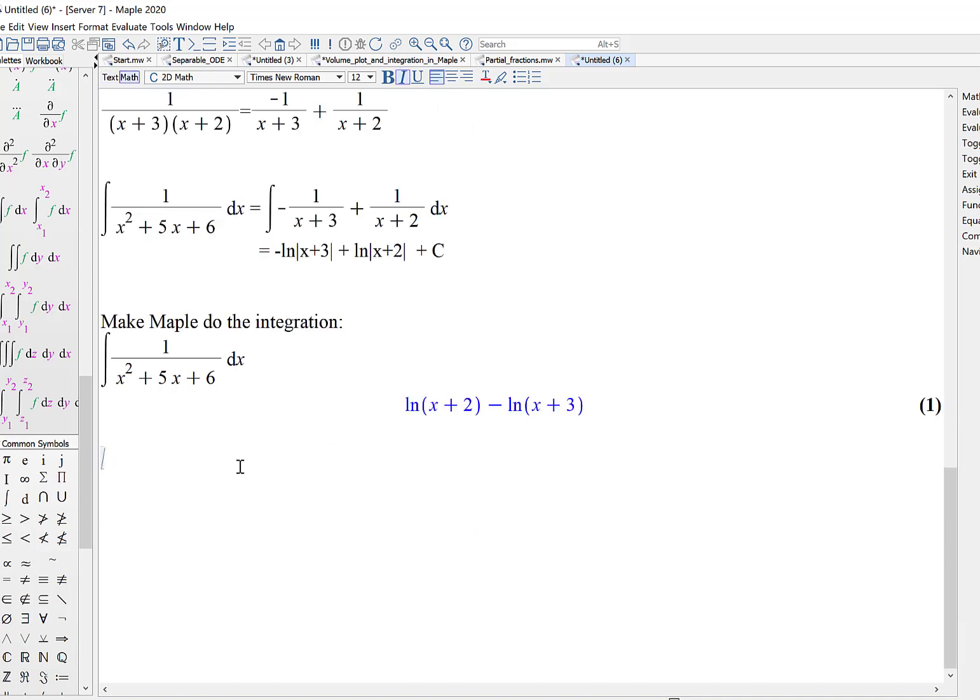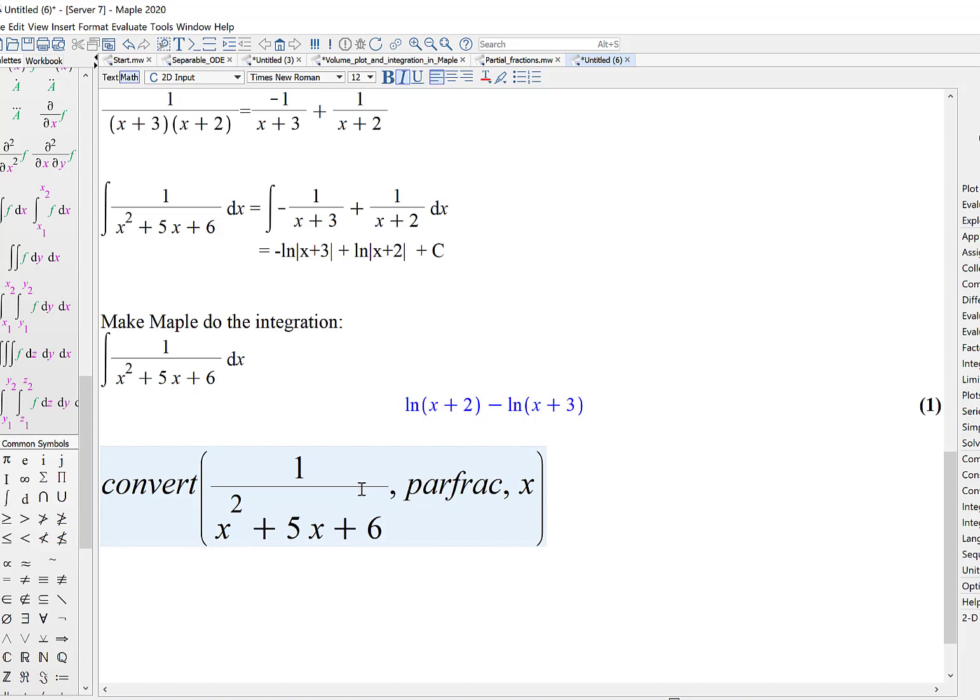We've asked Maple to convert the fraction to partial fractions, and the code is convert parentheses 1 over your fraction comma parfrac comma x because x is our variable. And again, we get exactly what we had found by hand. So there's a couple of different ways that you can explore Maple's computational power in this module.